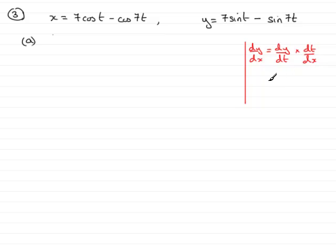You can also write this a different way. You can write dy/dt, but instead of timesing by dt/dx, this is the same result as dividing by dx/dt. So it's this idea that we're going to follow. So starting off, I'm going to find dy/dt.